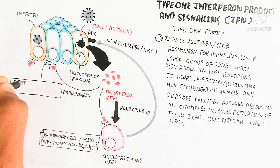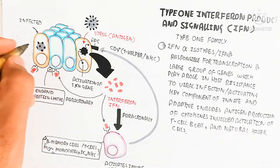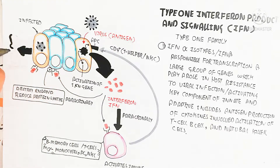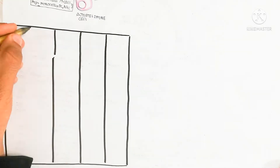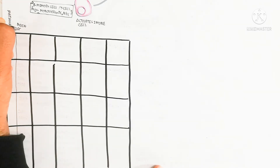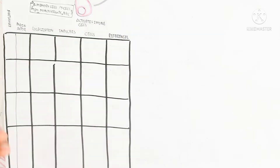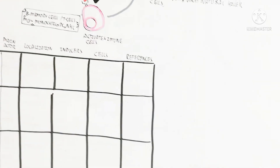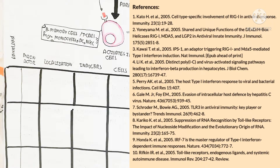Now let's begin to understand the pathway in more detail. I am drawing a graph showing the receptor pathways, including the RIG1 and MDA5 pathway, the TRIF pathway, and the IRF interferon receptor factor 7 pathway. The table covers major action, localization, inducer, cell type, and references from research papers. The link will be put in the description below for understanding the full article about type 1 interferon production and signaling pathway.